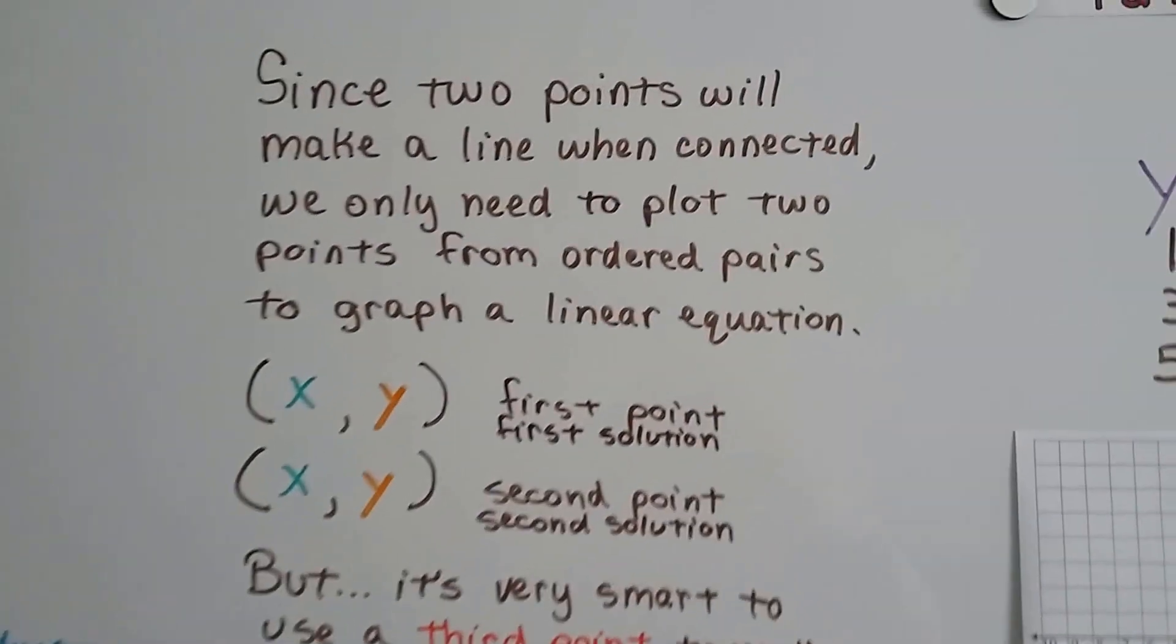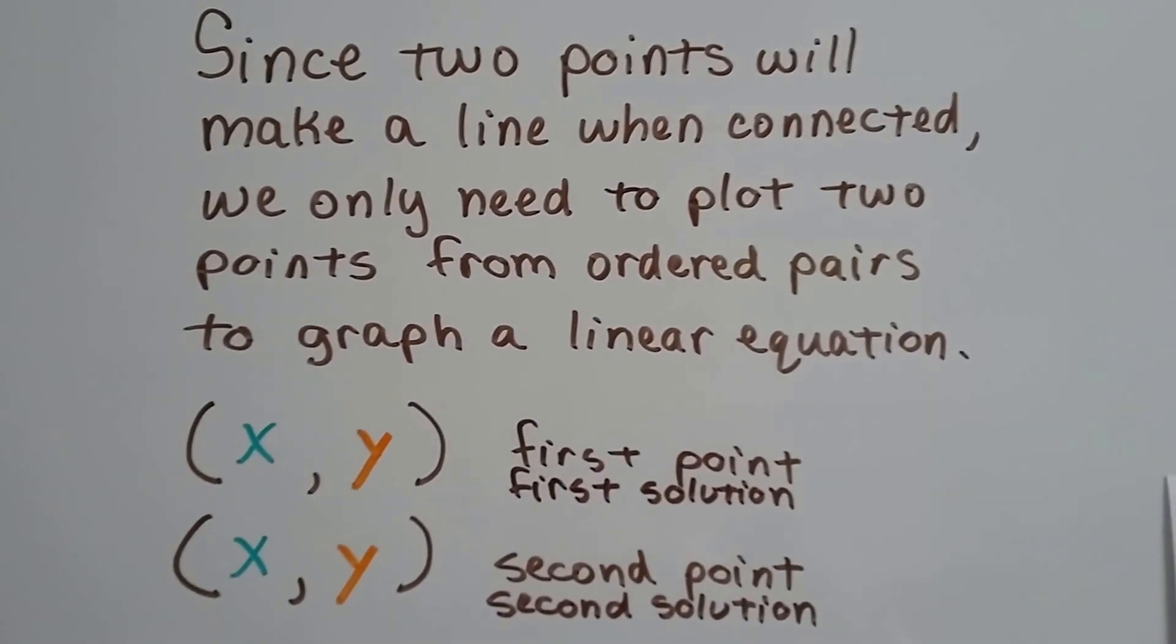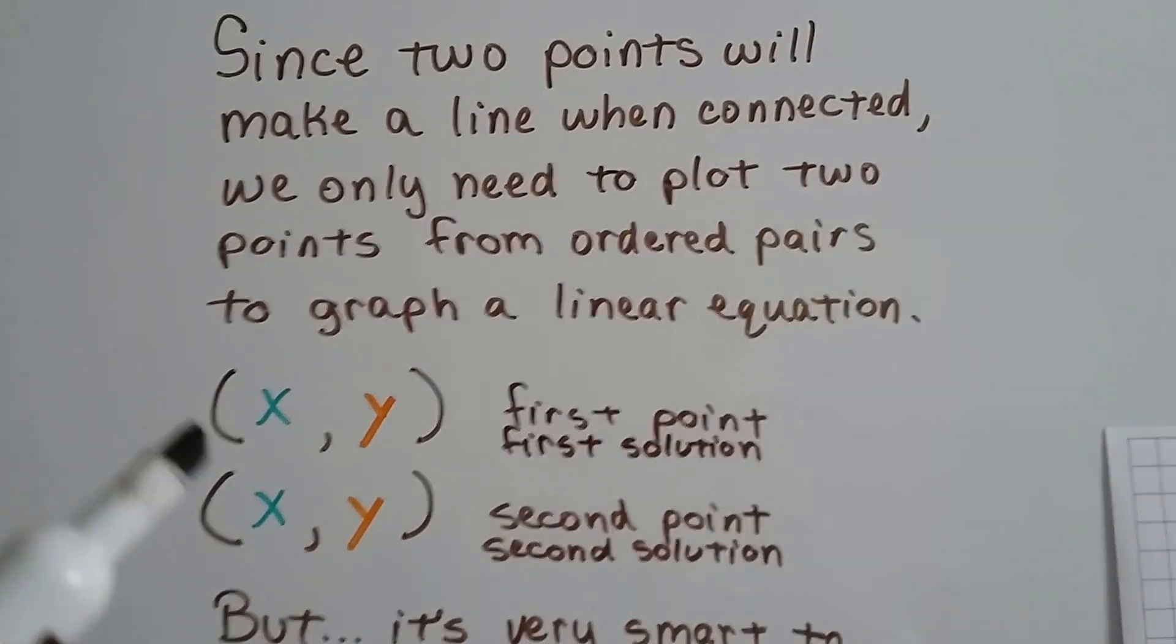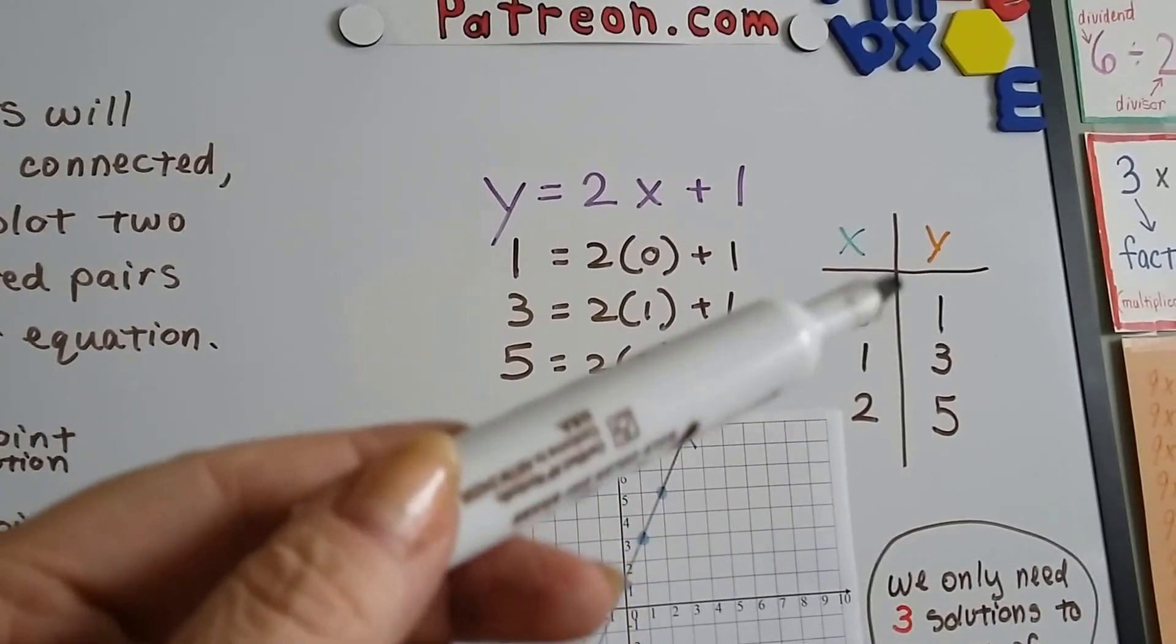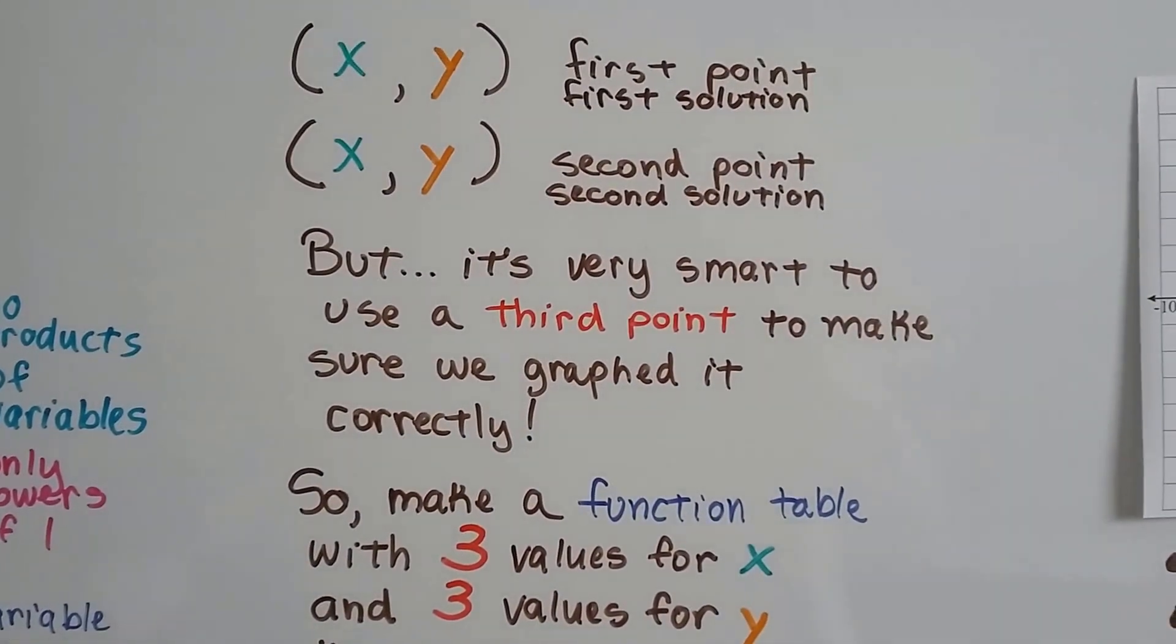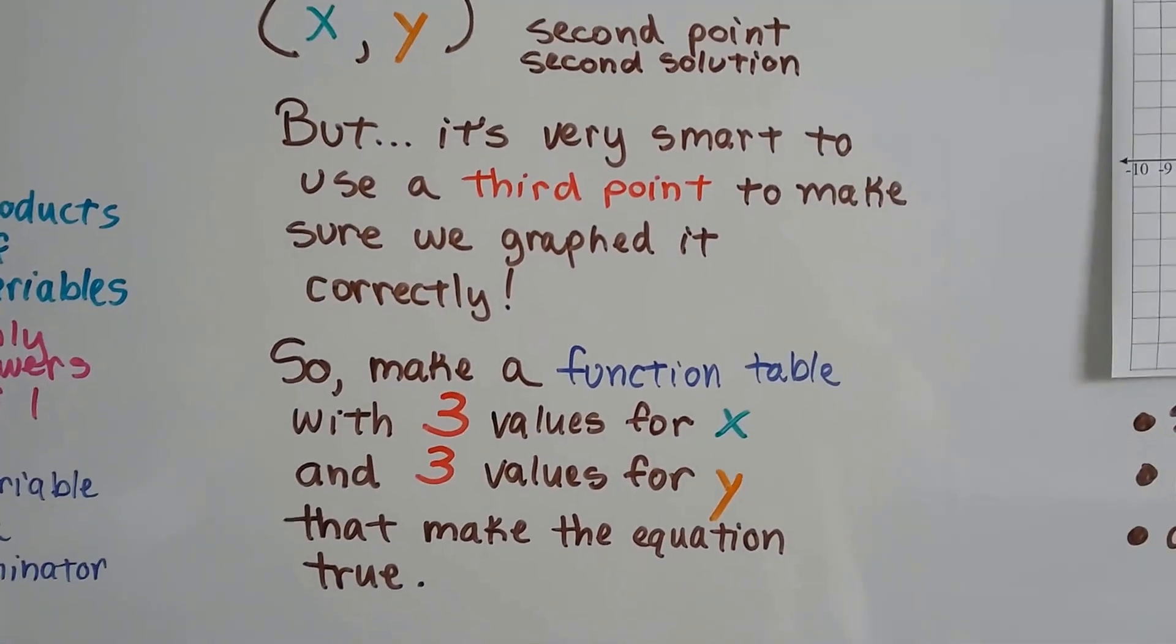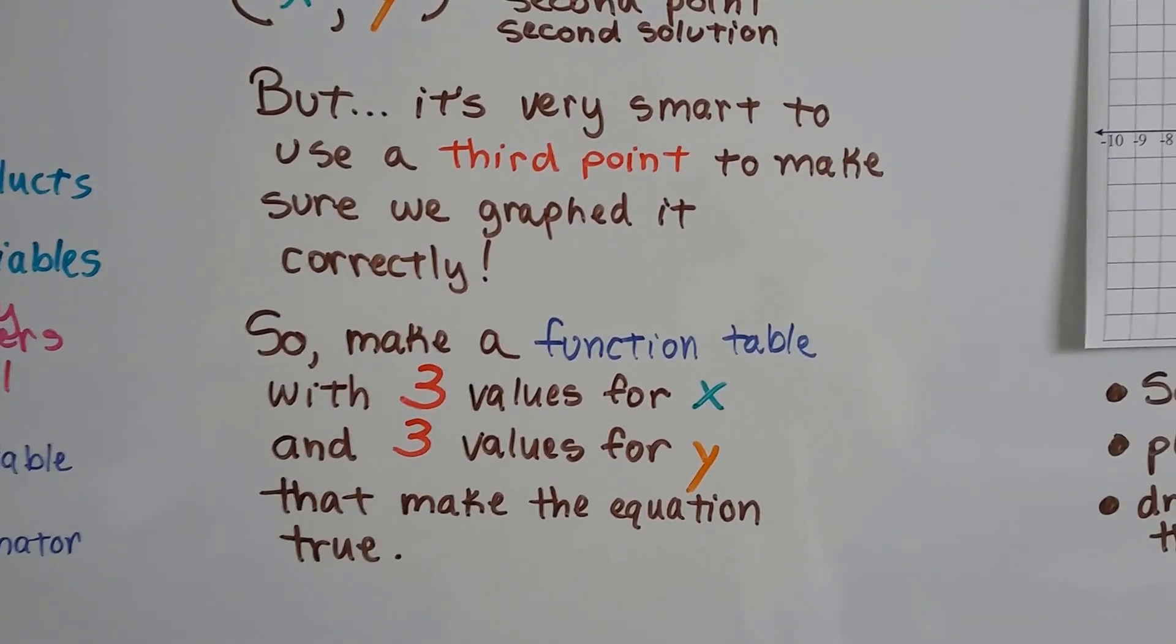Since 2 points will make a line when connected, we only need to plot 2 points from ordered pairs to graph a linear equation. You find the x and y value of the first point, the first solution, and you get an x and y value for a second solution. If you had a function table, you would only need really just 2 x and 2 values for y. But it's very smart to use a third point to make sure we graphed it correctly. So you make a function table with 3 values for x and 3 values for y that make the equation true.